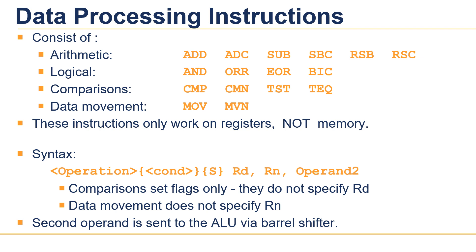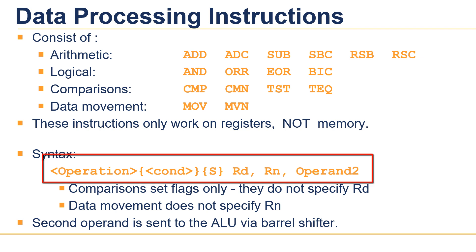The AND instruction is used for masking bits, and EOR is mainly used for inversion of bits. There are also comparison instructions that do not produce a result but only set condition codes: CMP works like a subtract, CMN is the complement negative and works like adding a negative number, TST is like an AND operation, and TEQ is like an EOR operation.